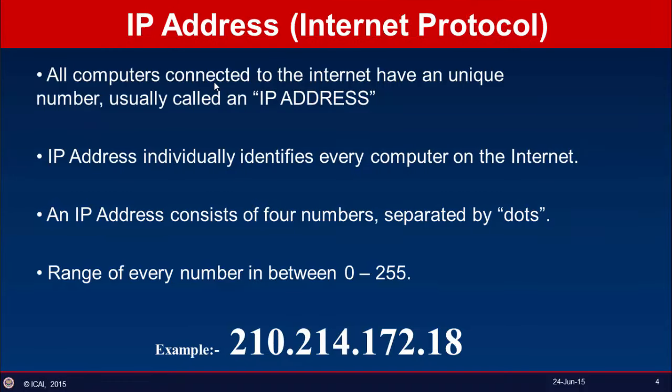Right now we are on IPv4 — that is the version we are currently using. All computers connected to the internet have a unique number called an IP address, which basically identifies every computer on the internet. IPv4 consists of four numbers separated by three dots, and the range of every number will always be between 0 to 255. A simple example is 210.214.172.18.